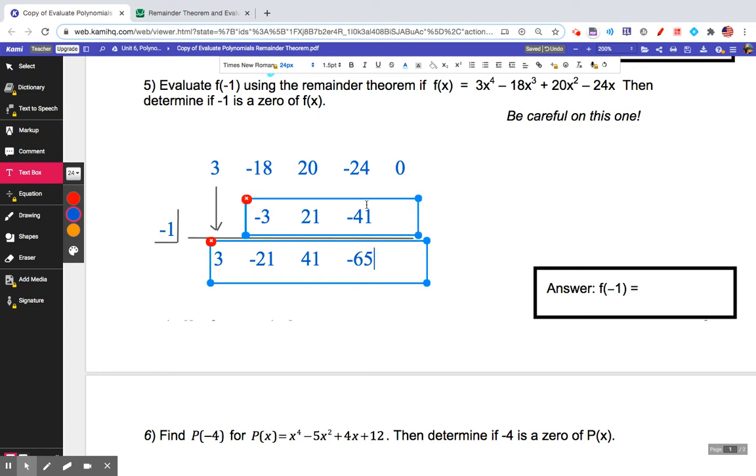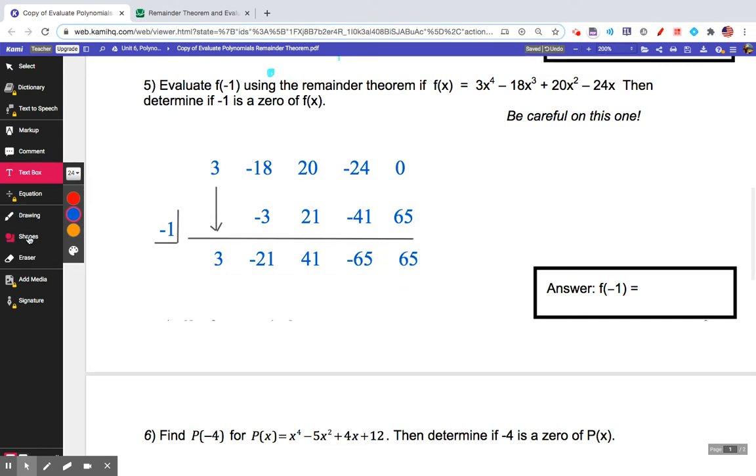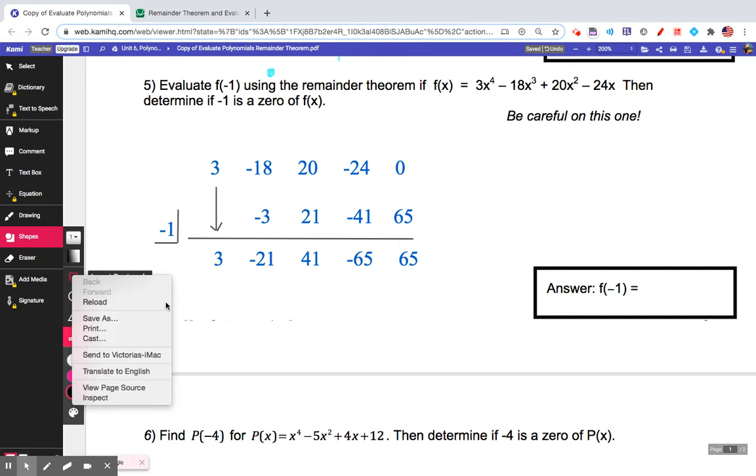-24 and -41 is -65. And -65 times -1 is 65. Oh boy, so that's a high y-value, isn't it? That's going to be my remainder. So once again, I'm going to grab my rectangle just to point out that this is definitely my remainder.